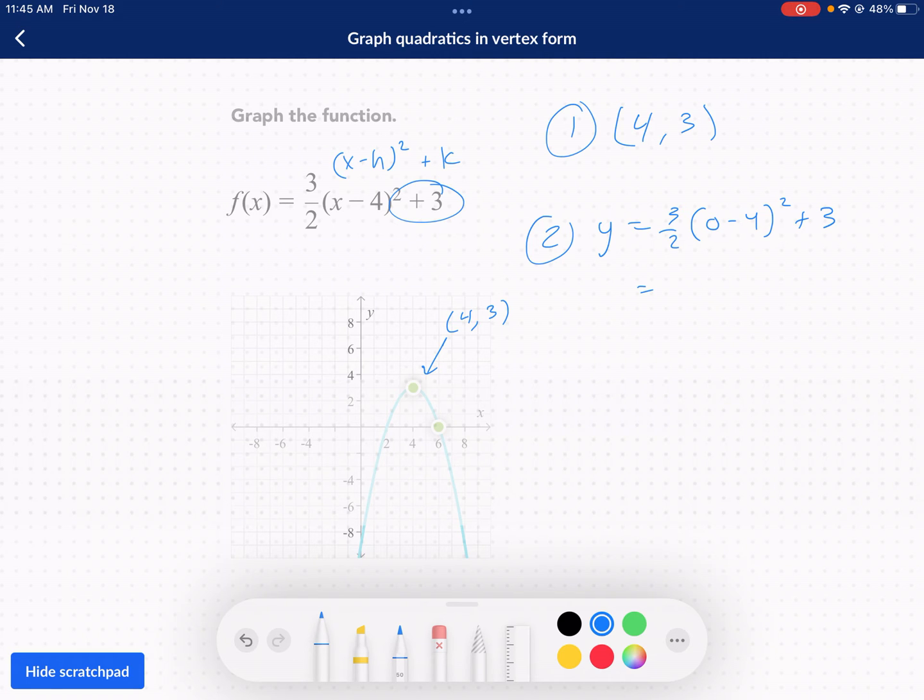So I know 0 minus 4 is minus 4. So I finished my parenthesis step. Now I'm on to my second step, which is exponents. So I'm going to square that. 3 over 2 times 16 plus 3. Now I'm on to my multiplication step. I'm going to cross off the 16 with the 2. That gives me 8. So now I have 24 plus 3. Final step, 24 plus 3 equals 27. And that's my y-intercept.